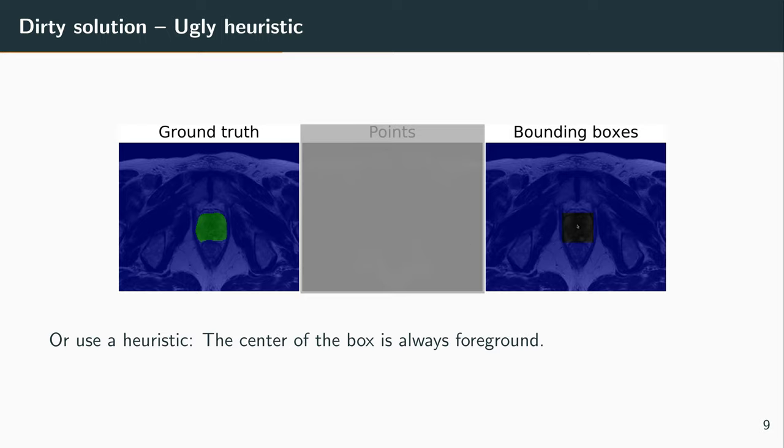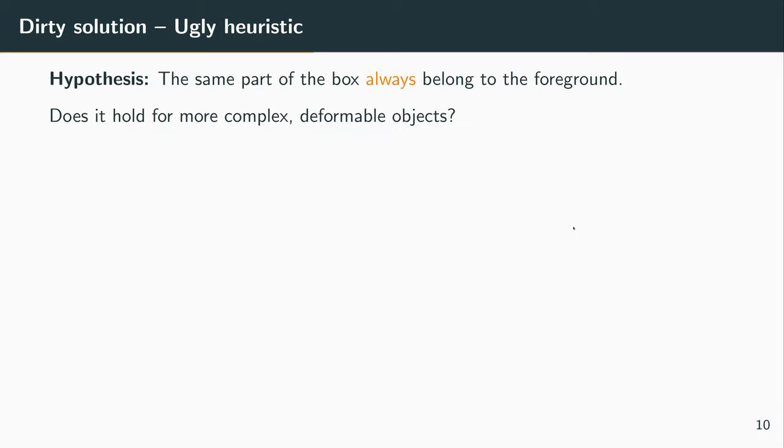We could have ugly heuristics. For instance, we can notice that here on this dataset, probably the middle of the box would belong to the object. So we could supervise some pixels around the middle of the box to belong to the object. But this is not very elegant.